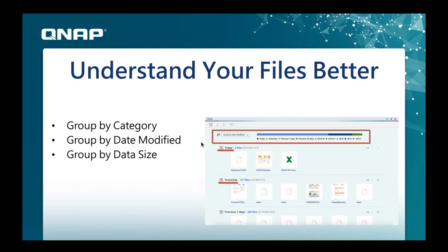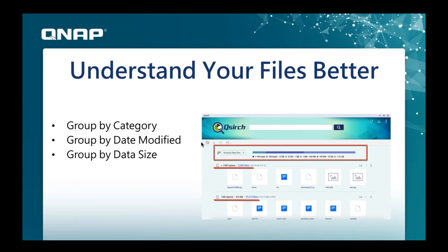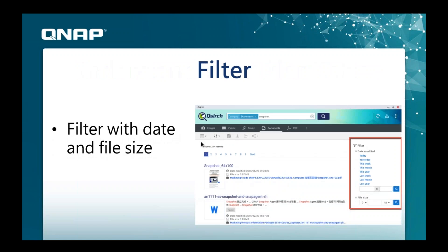You can also group by date modified — it shows how much data you have from today, yesterday, seven days ago, or a month ago. Grouping by size shows results from less than 100 bytes up to more than 10 gigabytes. On top of that, you can filter by date using a time period, or filter by file size if you want to search within a certain size range.